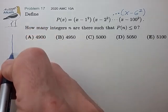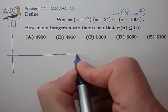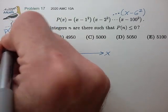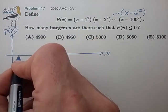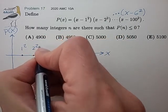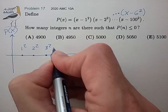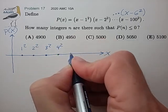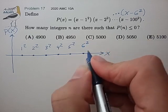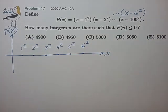So let me try to draw this out, x, p of x, and we have zeros at 1 squared, 2 squared, 3 squared, 4 squared, 5 squared, and 6 squared. These are more spread out, but I think you get the idea.